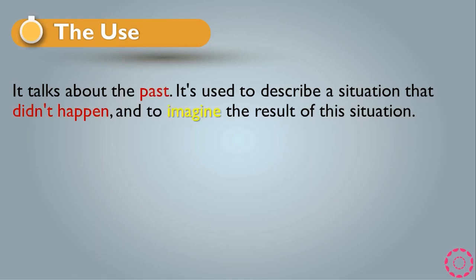The third conditional talks about the past. It's used to describe a situation that didn't happen and to imagine the result of that situation. So it's used for talking about the past, describing a situation that didn't happen in the past, or to imagine the result of this situation.